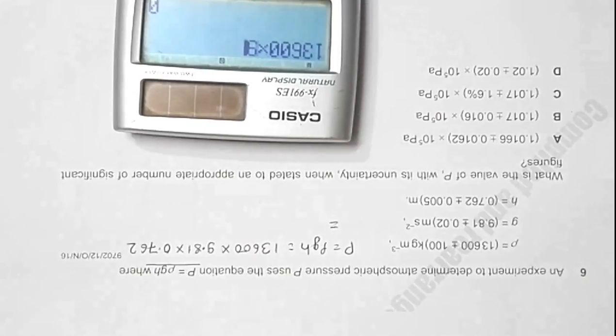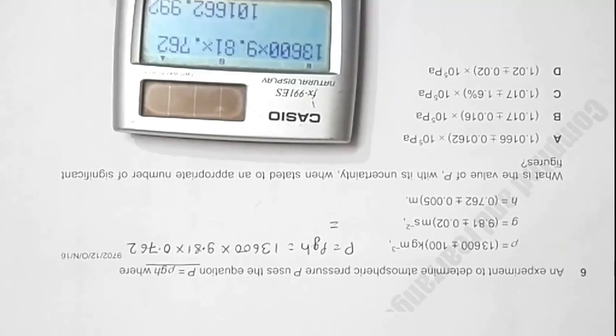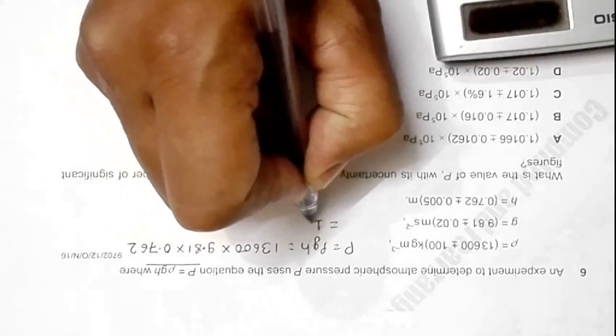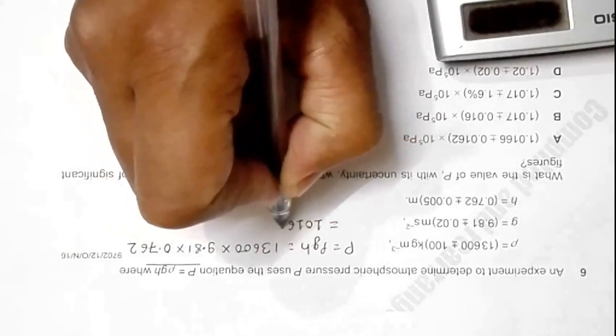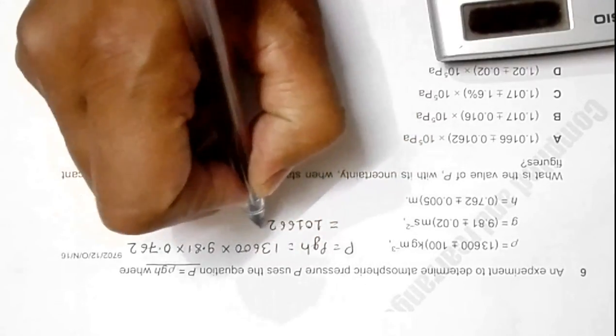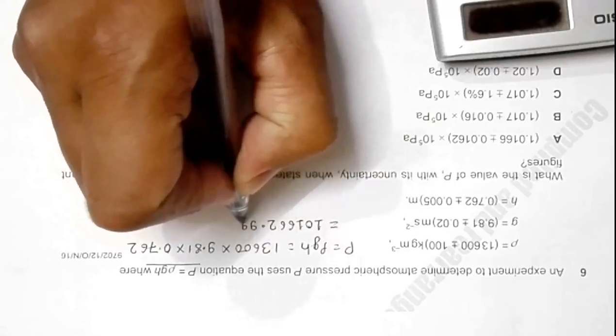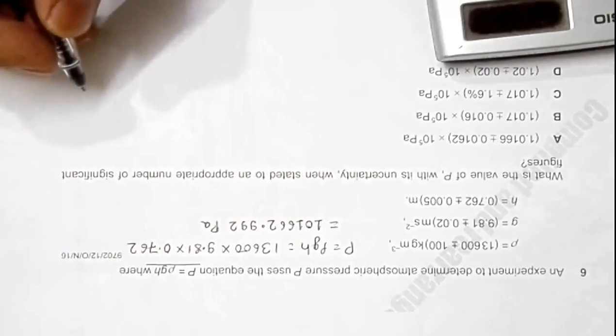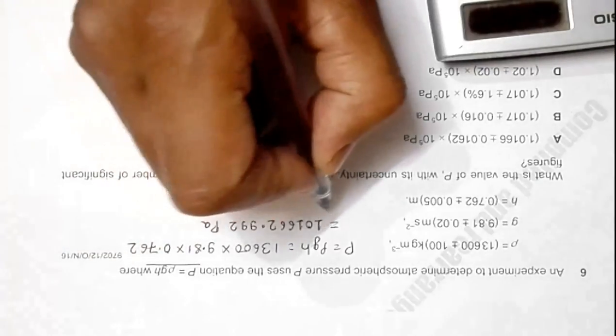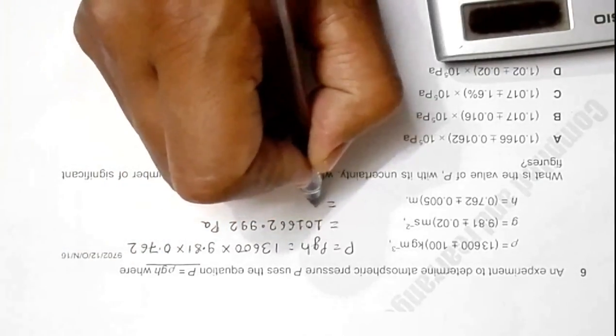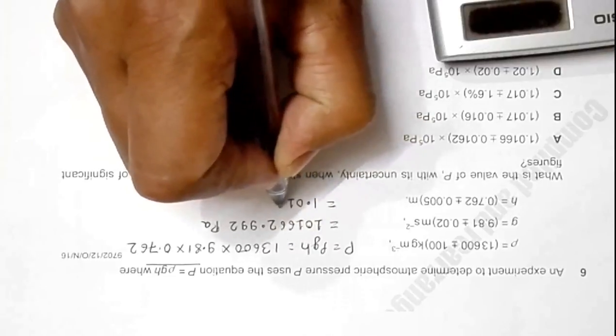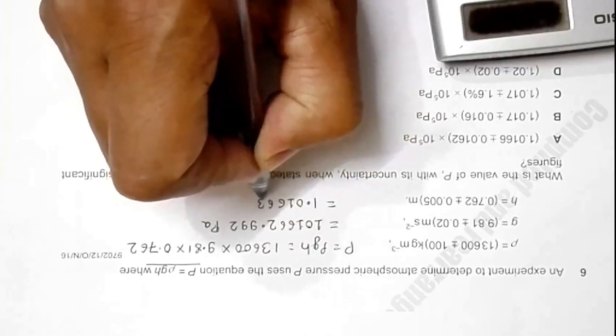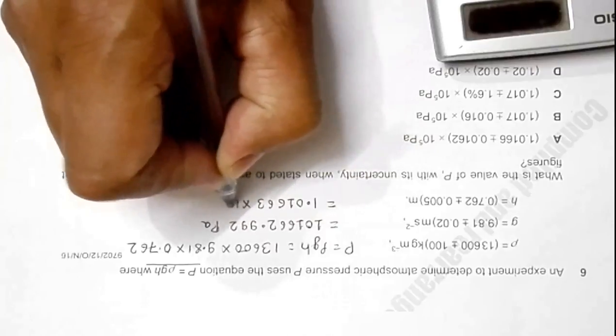The answer is 101,662.992 Pascal. If I write it in the form of 10 to the power 5, it should be 1.01663 times 10 to the power 5 Pascal. I have used a lot of significant figures here.